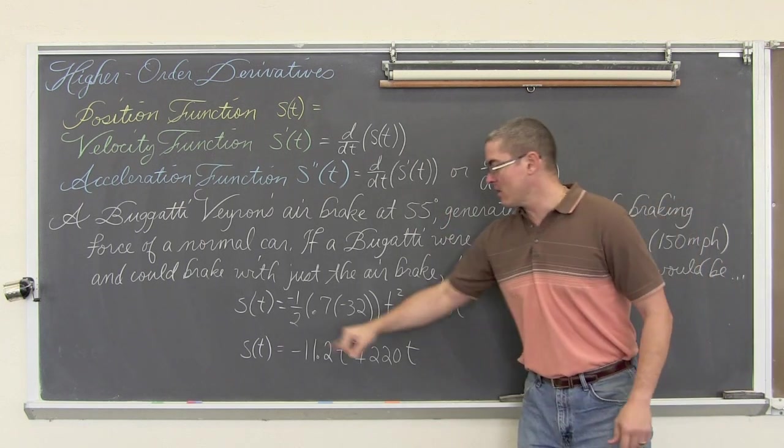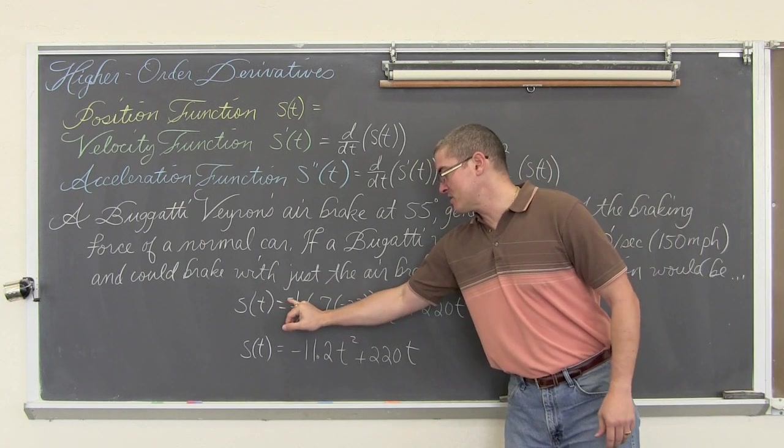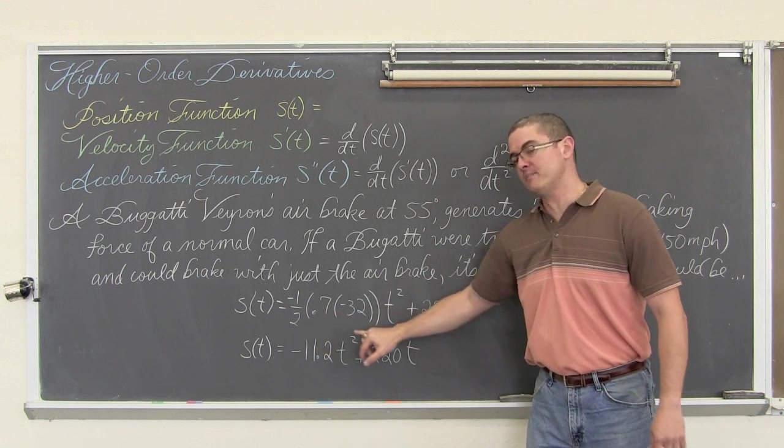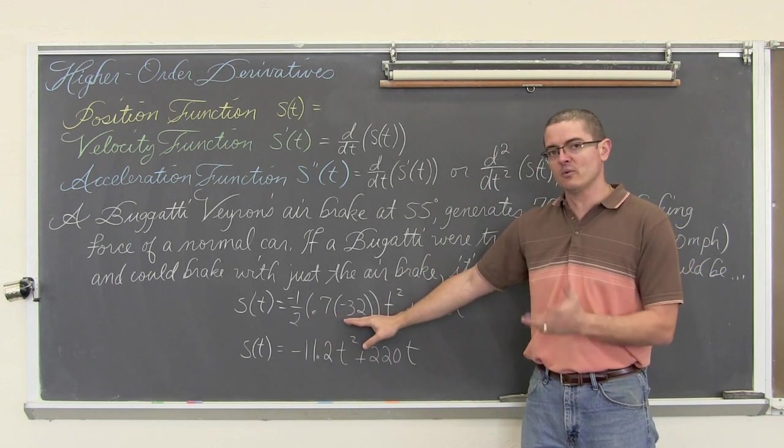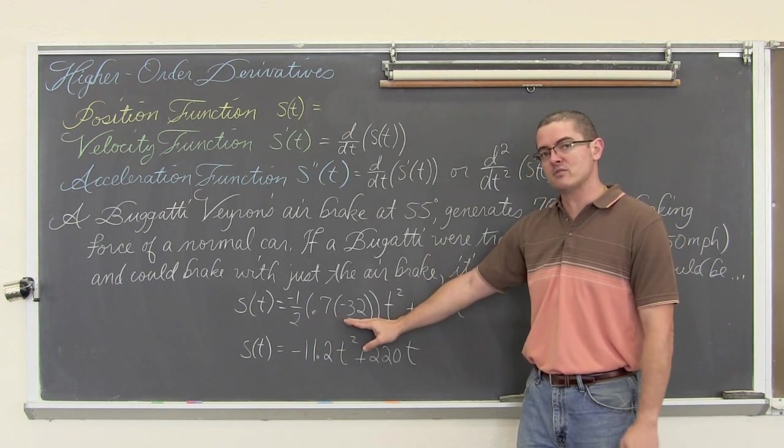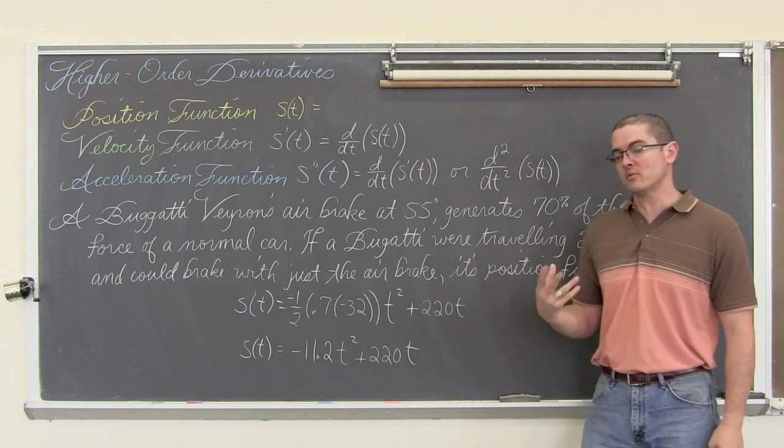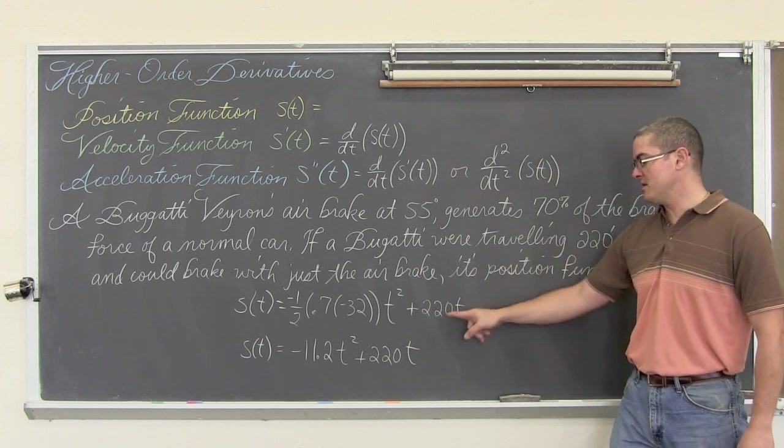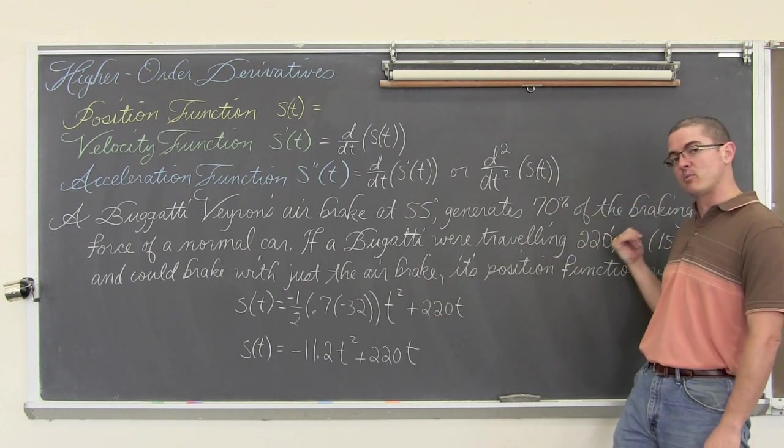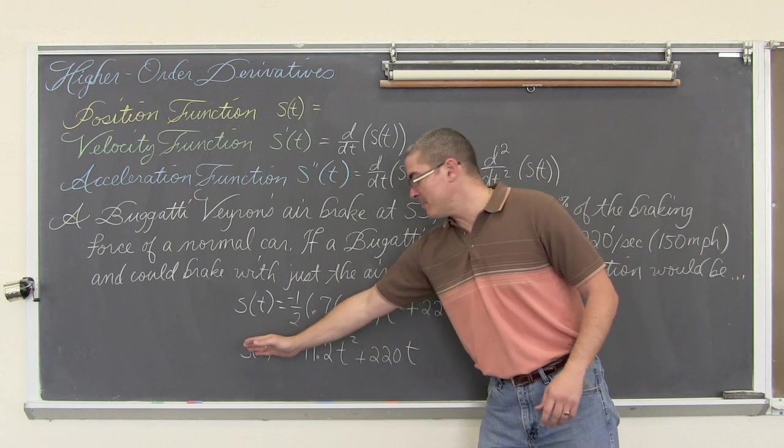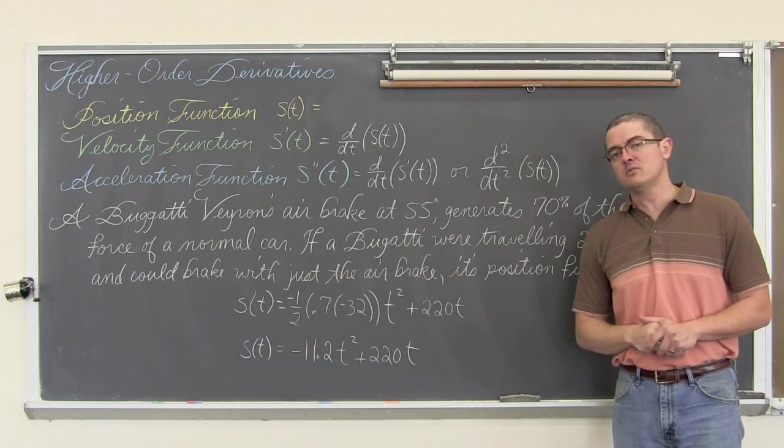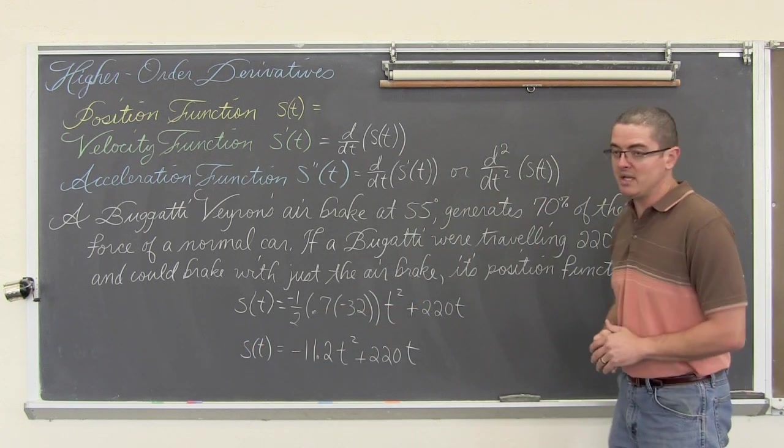And we have got therefore a position function which is negative 1.5 times 70% of what I am assuming to be a reasonable braking force of an average car of 1g of force or negative 32 feet per second per second times t squared plus 220t. This is the initial velocity we have in the problem. And we get a position function of negative 11.2t squared plus 220t.